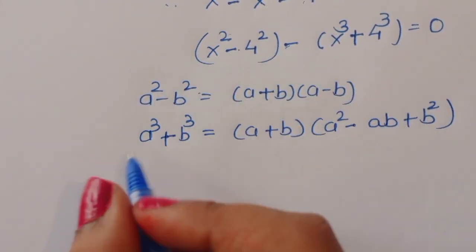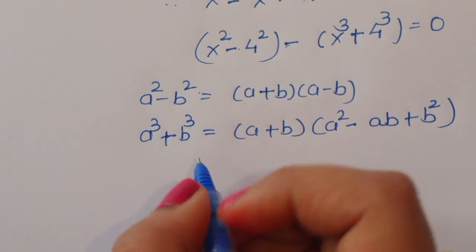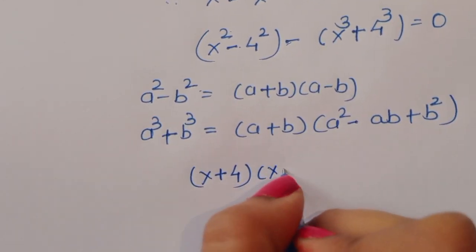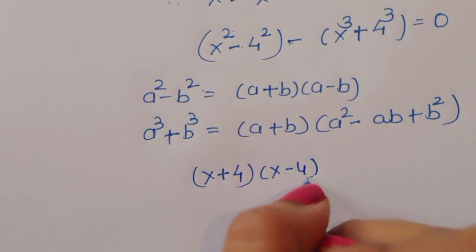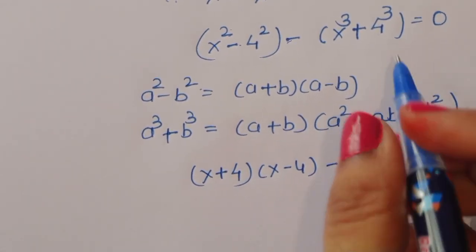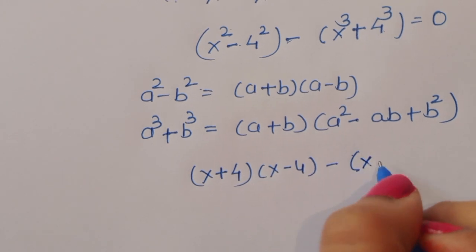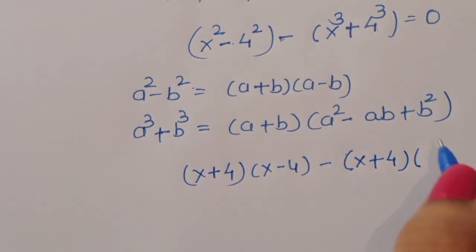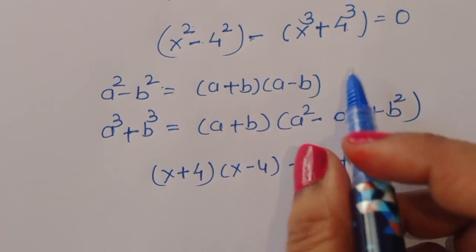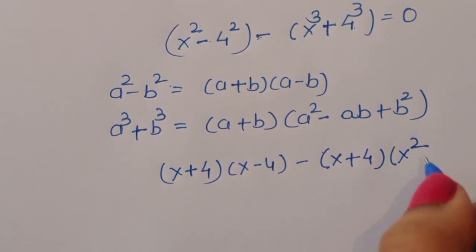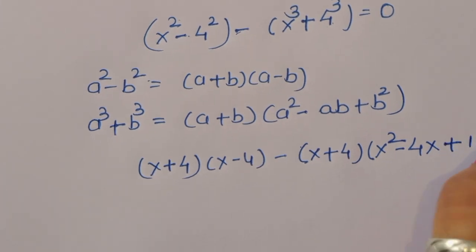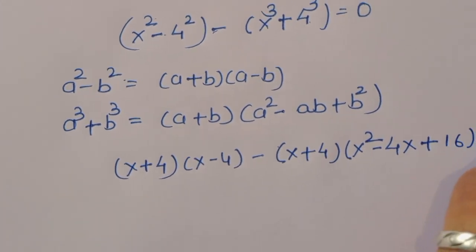Using these two formulas, x squared minus 4 squared becomes (x + 4)(x − 4). Then minus the term (x + 4) times (x squared minus 4x plus 16) is equal to 0, applying the sum of cubes formula with a = x and b = 4.